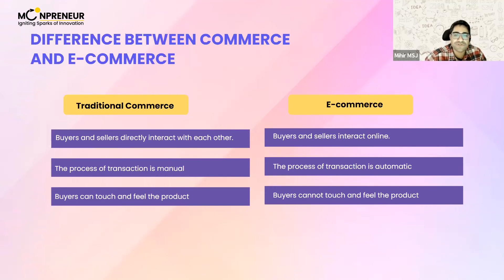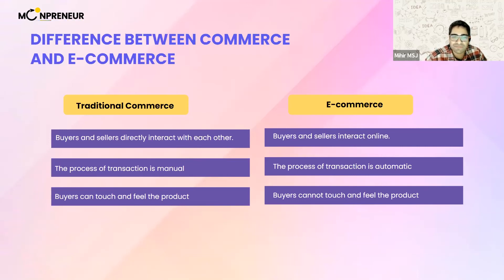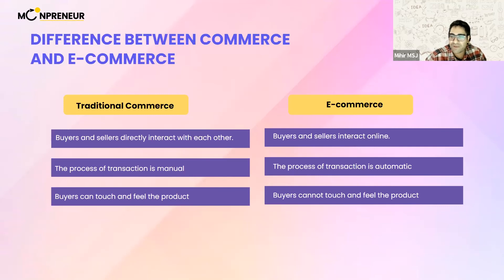In e-commerce, you simply click a button online and trust the platform — like Amazon — pay them, and expect a delivery. Amazon then pays the seller, who ships the item to you. Even in traditional commerce, the transaction process is more manual, even if you use a debit or credit card. Swiping a card in a store is commerce. But entering your card details online on Amazon to buy something — that's e-commerce. The medium of the transaction matters more than the mode of payment.